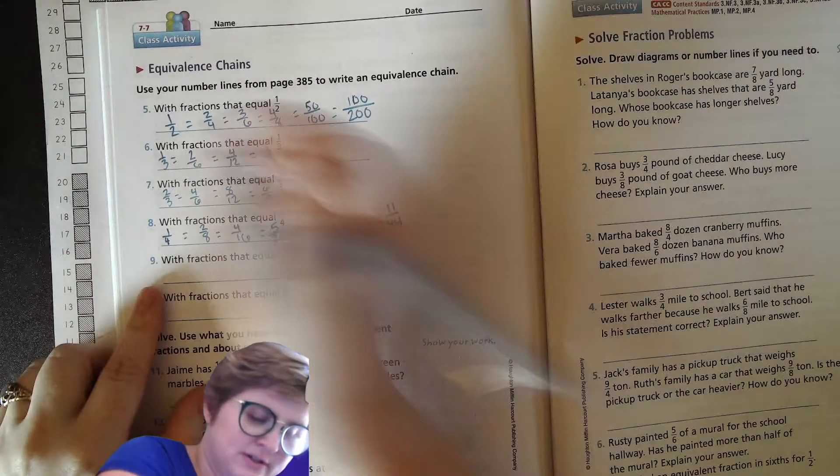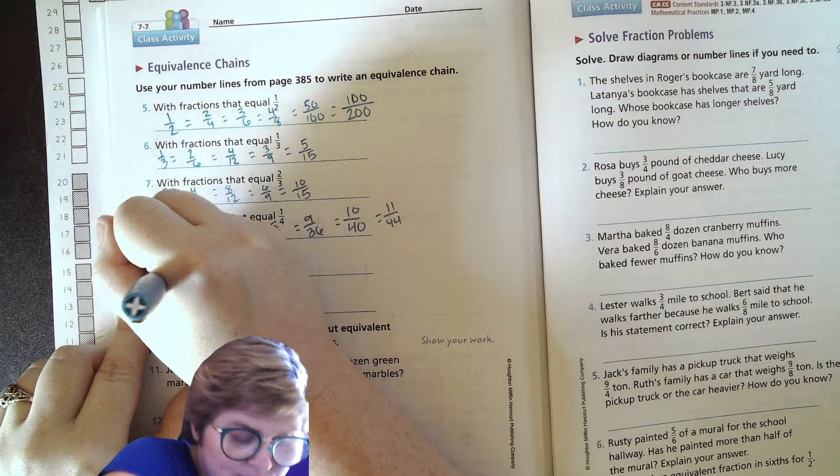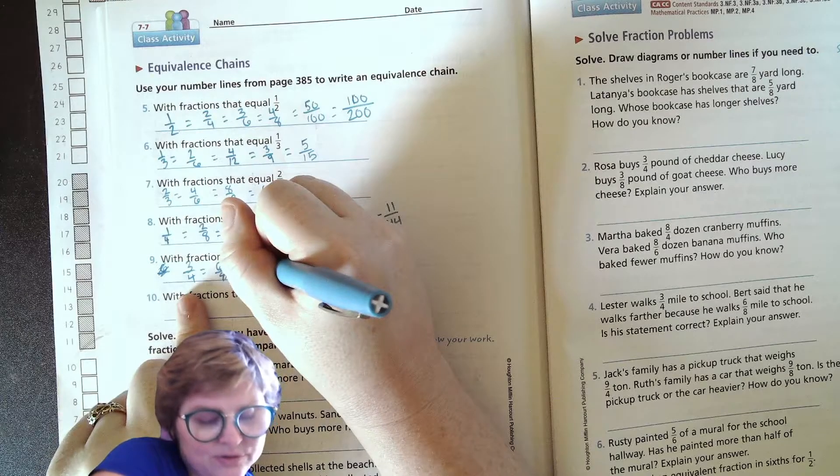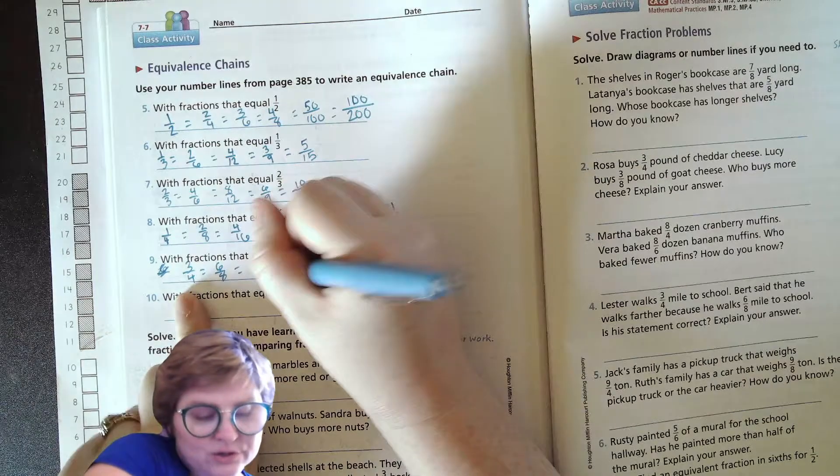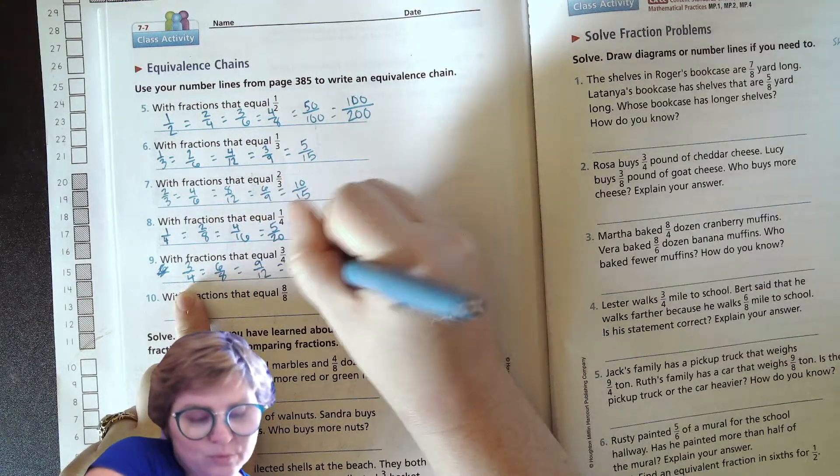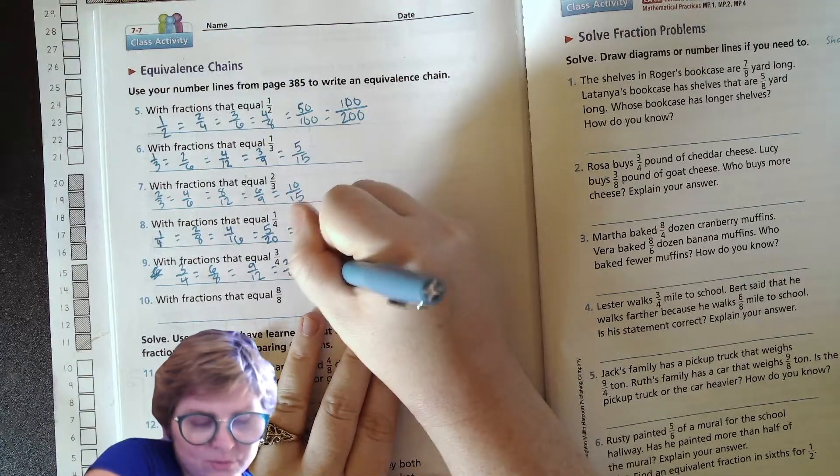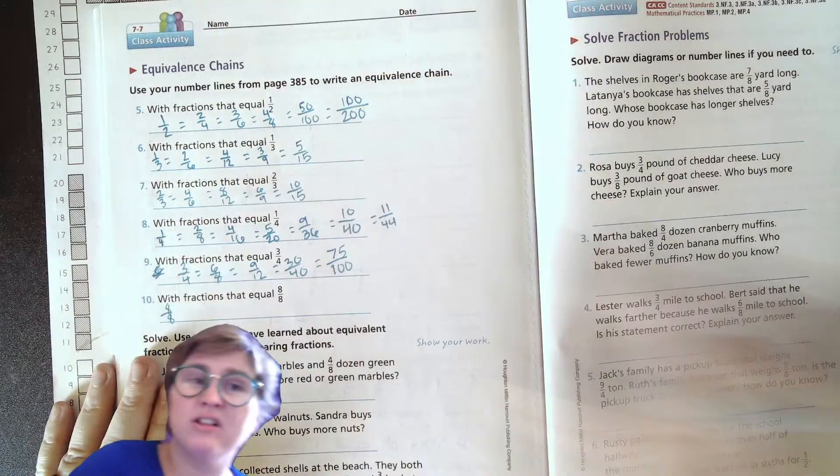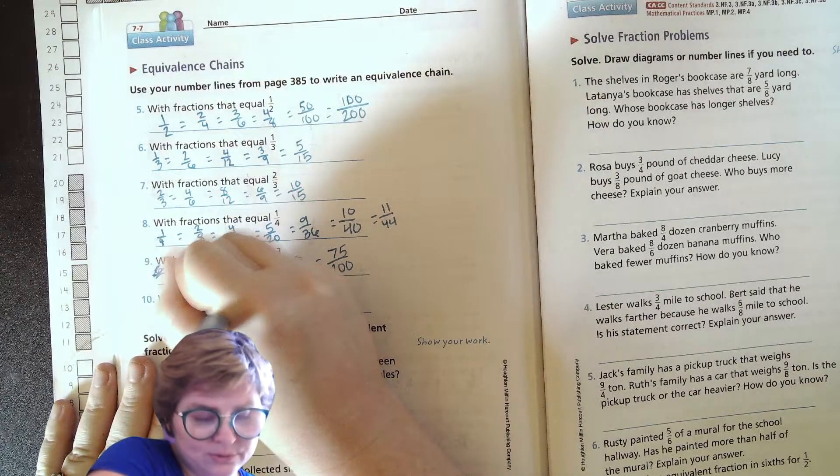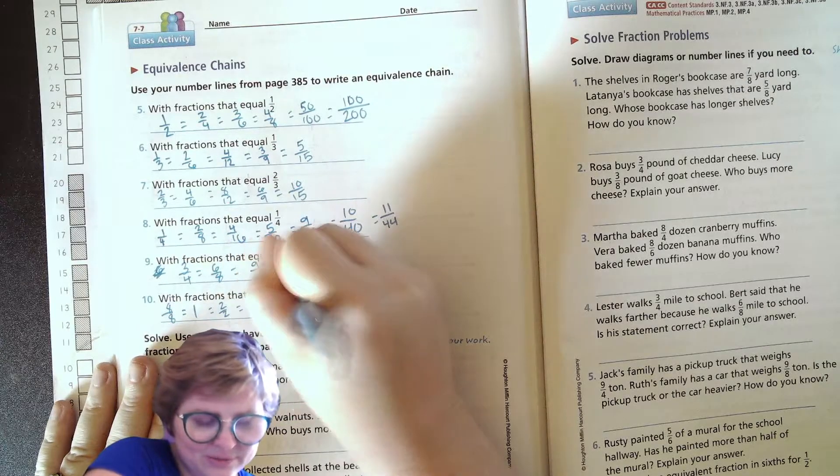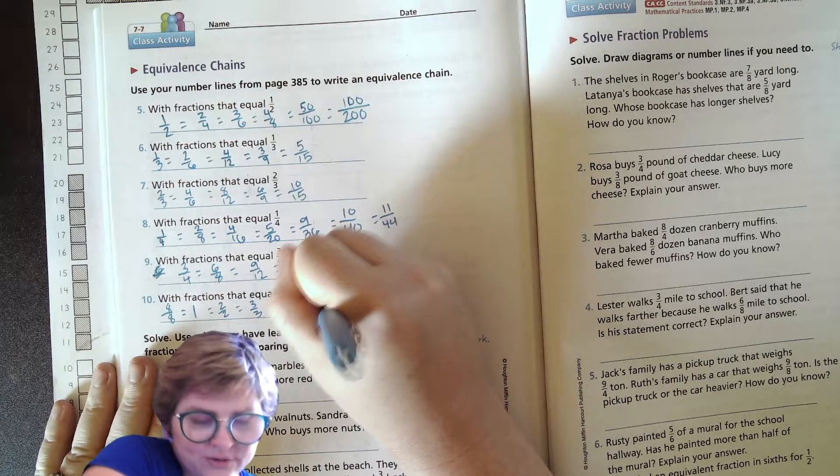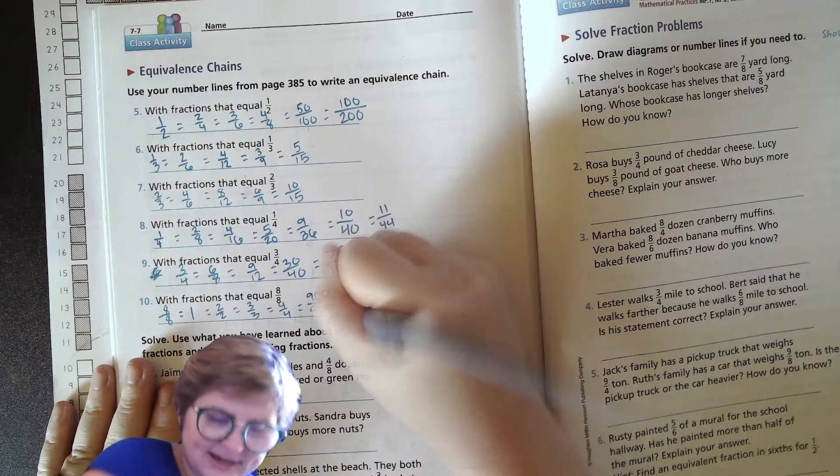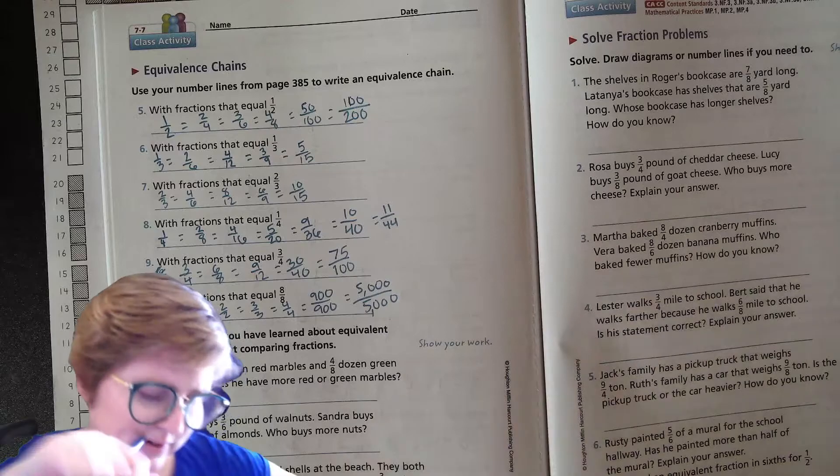Fractions that are equal to three-fourths. Okay, that would be six-eighths if you double both of those. Let me start with three over four equals six over eight. Or let's see, if we're trying to make twelve, nine over twelve. We could do thirty-fortieths. We could multiply them both by 25 and do seventy-five one-hundredths. And then eight over eight, that's going to be anything that's equal to one, right? Eight over eight, because that's all of the pieces, equals one, equals two over two, equals three over three, equals four over four, equals nine hundred over nine hundred, equals five thousand over five thousand. Any number over itself is equal to one.